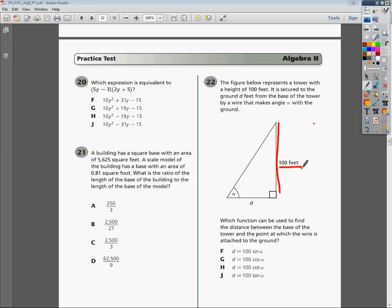It is secured to the ground D feet. Again, we don't know how much D is, that's our unknown there. D feet from the base of the tower by a wire that makes angle alpha with the ground. That's what this funky little symbol here is, alpha.